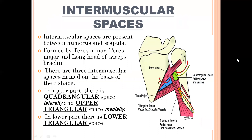Now, intermuscular spaces. These spaces are present between the humerus and scapula and are formed by the muscles: teres minor, teres major, and long head of triceps brachii. There are three intermuscular spaces named by their shapes. In the upper part, the quadrangular space is present laterally and the upper triangular space is present medially. In the lower part, there is the lower triangular space.